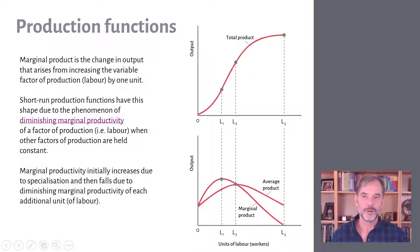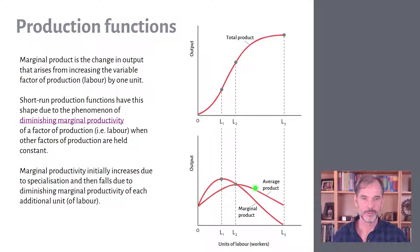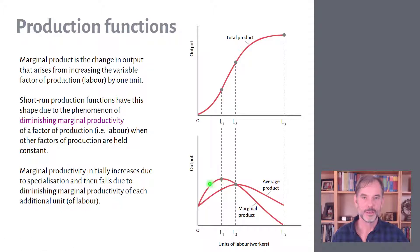Diminishing marginal productivity is key to understanding production costs. The average product is the total output divided by the total number of workers — slightly different from the marginal product. The marginal product is the unit-by-unit contribution of each additional worker, while the average product is the overall average. How do they relate to each other?